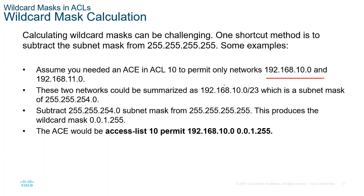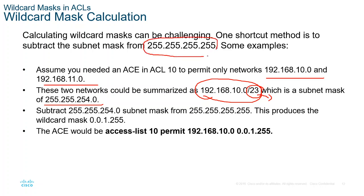Next example: let's say we have two networks, 192.168.10.0 and 192.168.11.0. We can do a summarization by combining these two networks, which results in a new summarized network 192.168.10.0 slash 23. For slash 23, the subnet mask is 255.255.254.0. Take all binary ones minus this subnet mask and you get the wildcard mask 0.0.1.255.